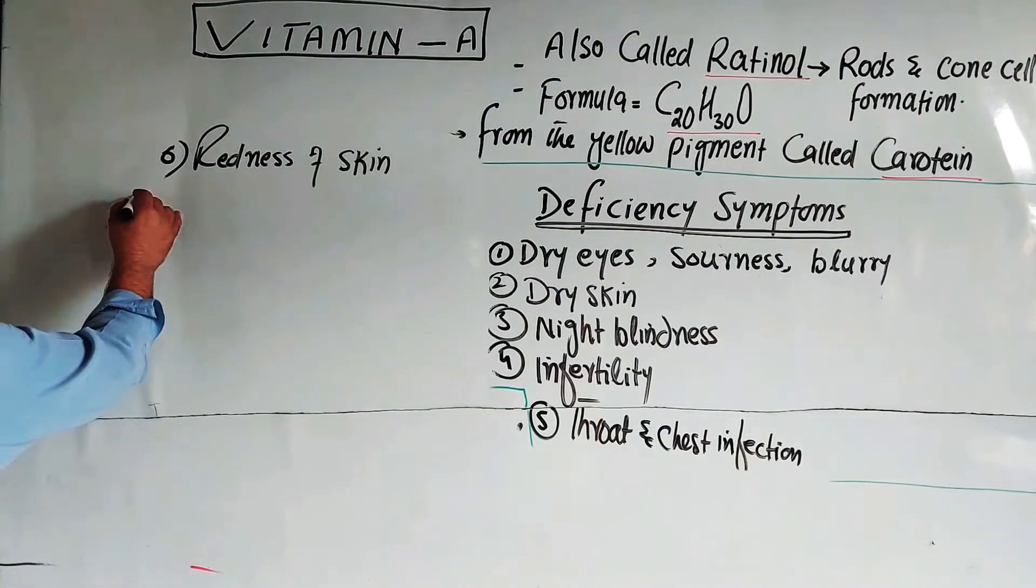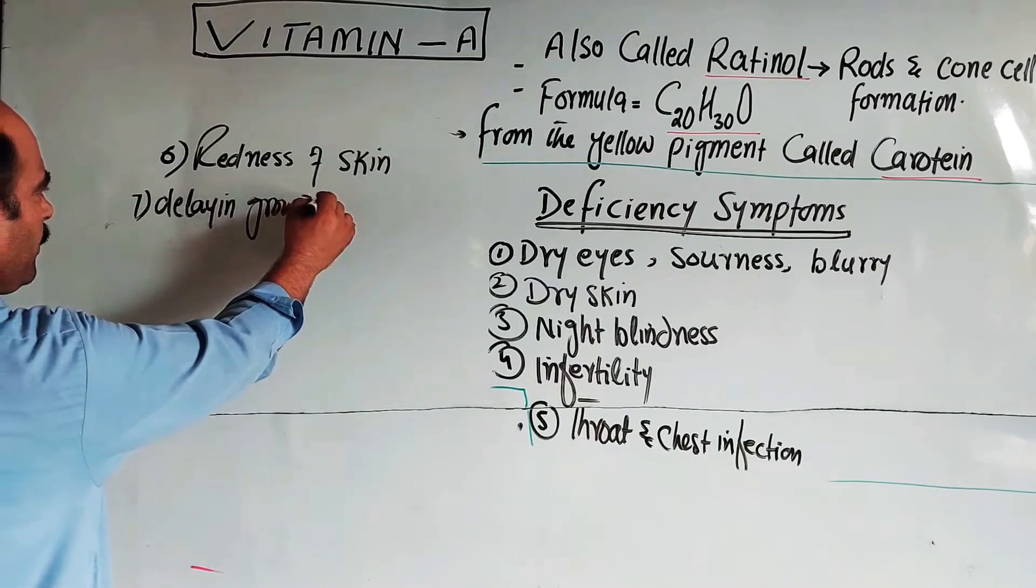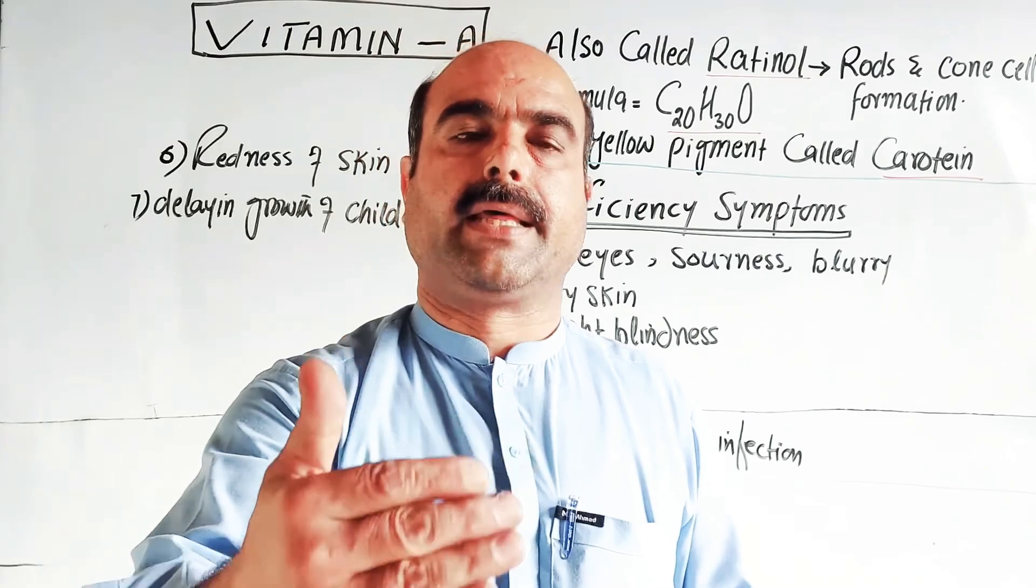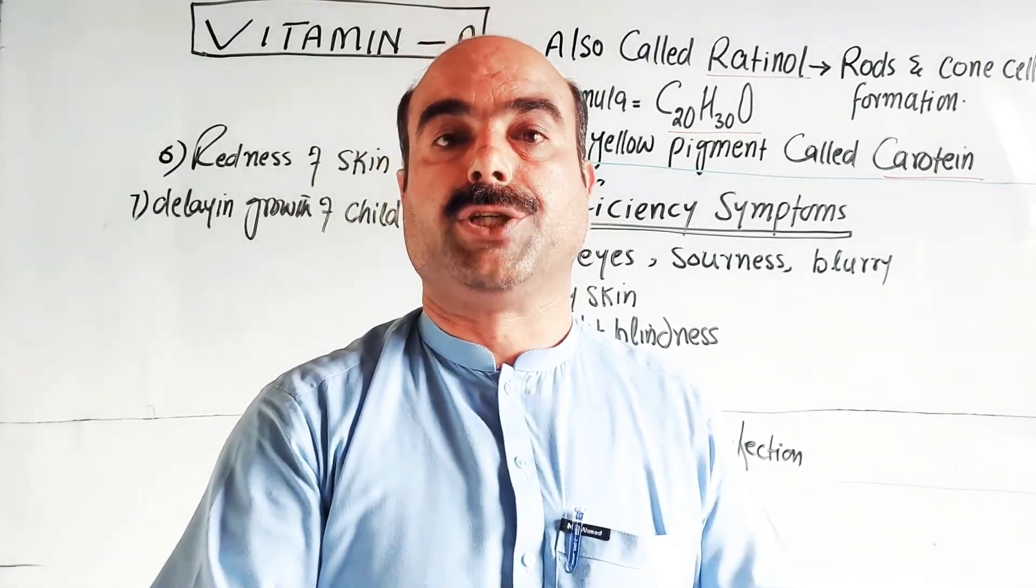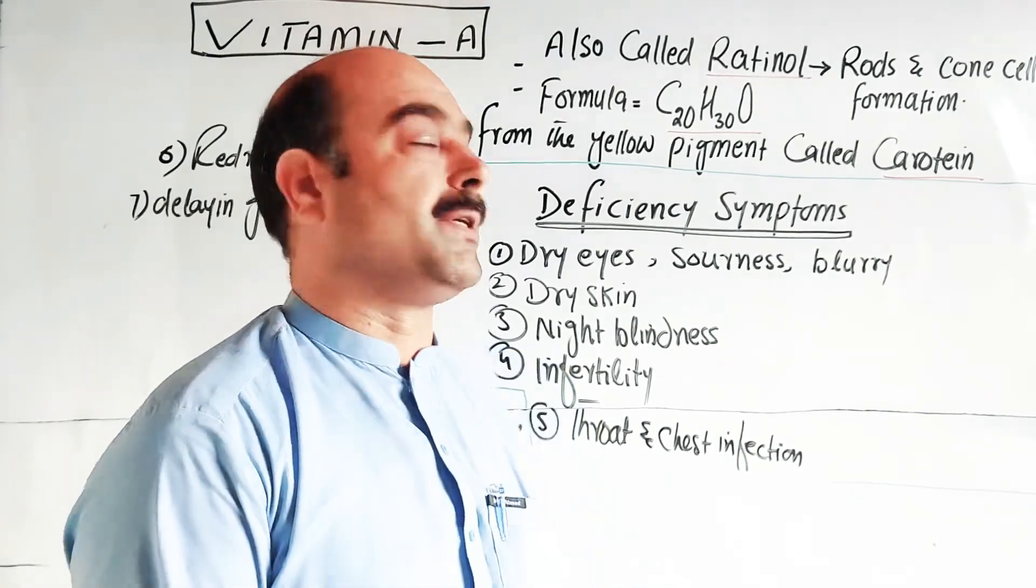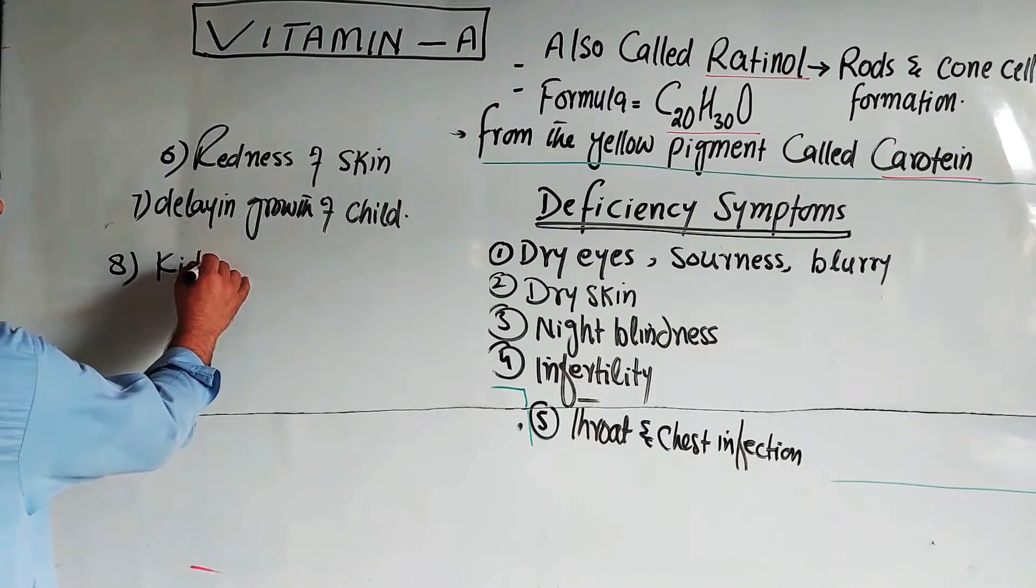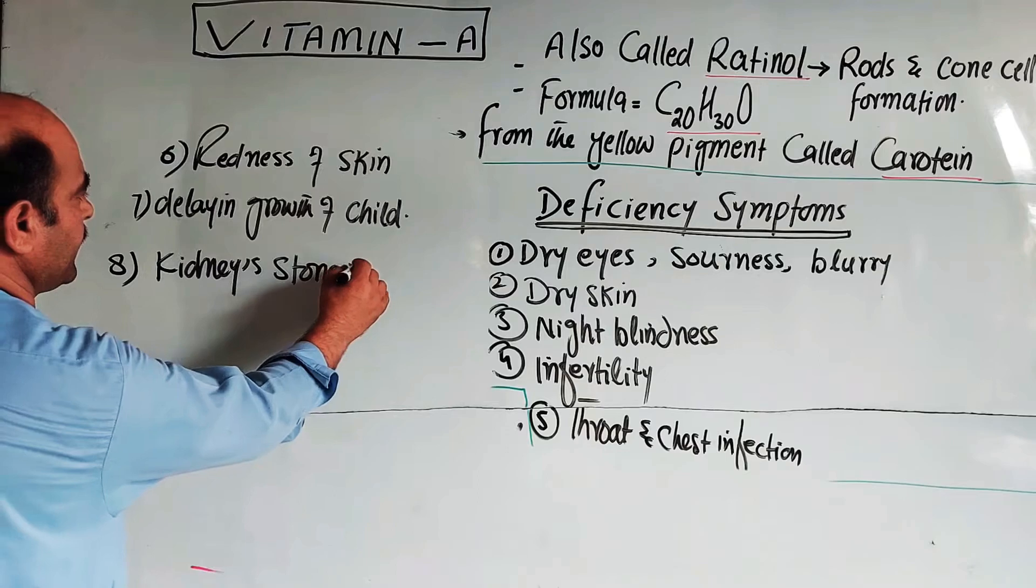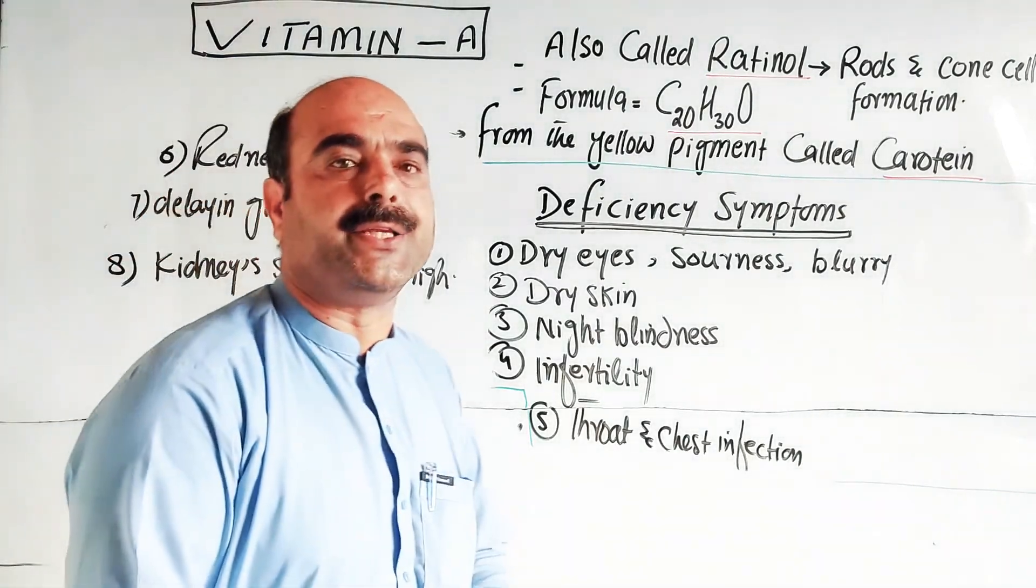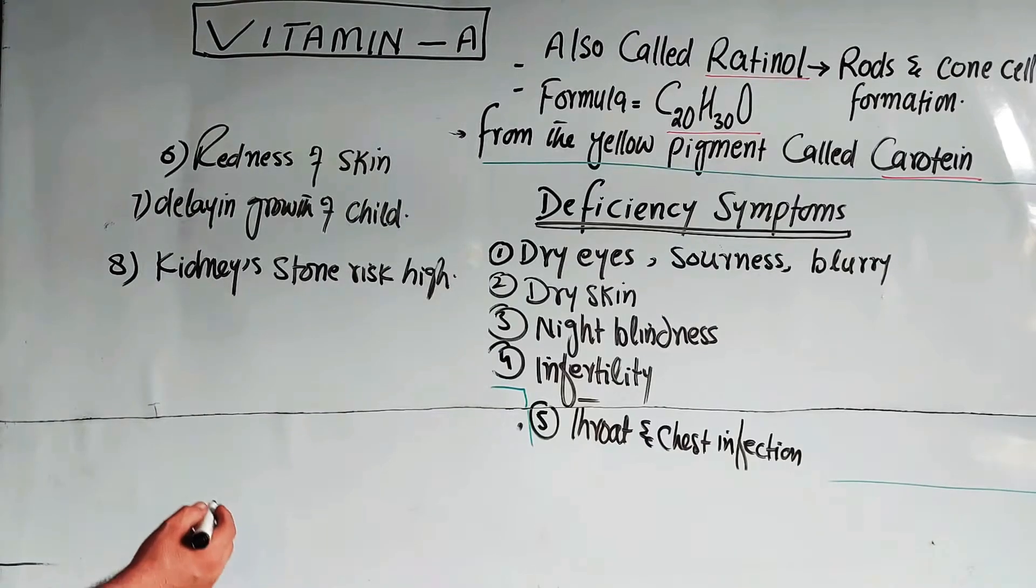Delay in growth of child - if Vitamin A is deficient, the child doesn't grow properly. Kidney stone risk is high, and there is poor absorption of food from intestine.